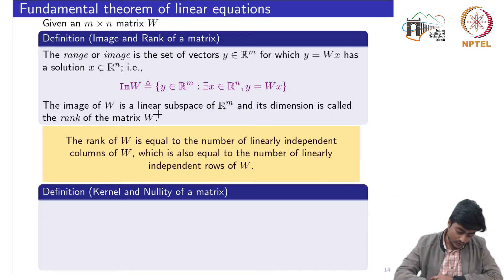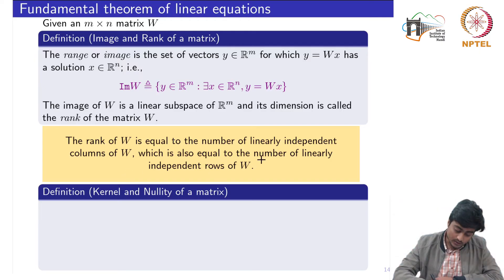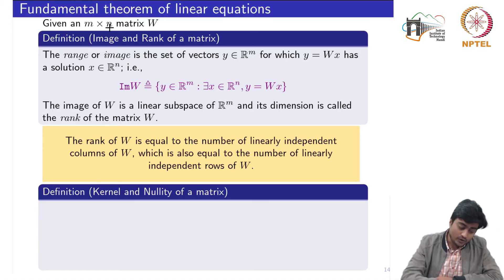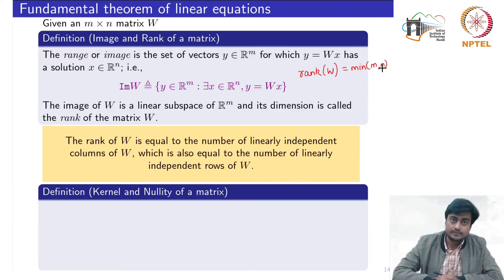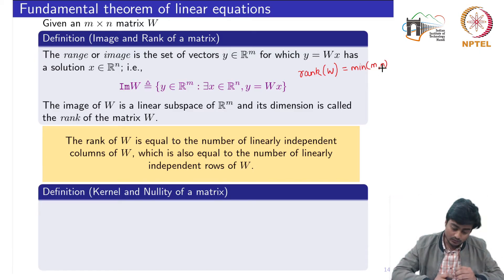The rank of the matrix W equals the number of linearly independent columns of W, which is also equal to the number of linearly independent rows of W. Since the matrix is m×n, the rank of W is at most the minimum of m or n, and may be less than both m and n if the matrix is not full rank.